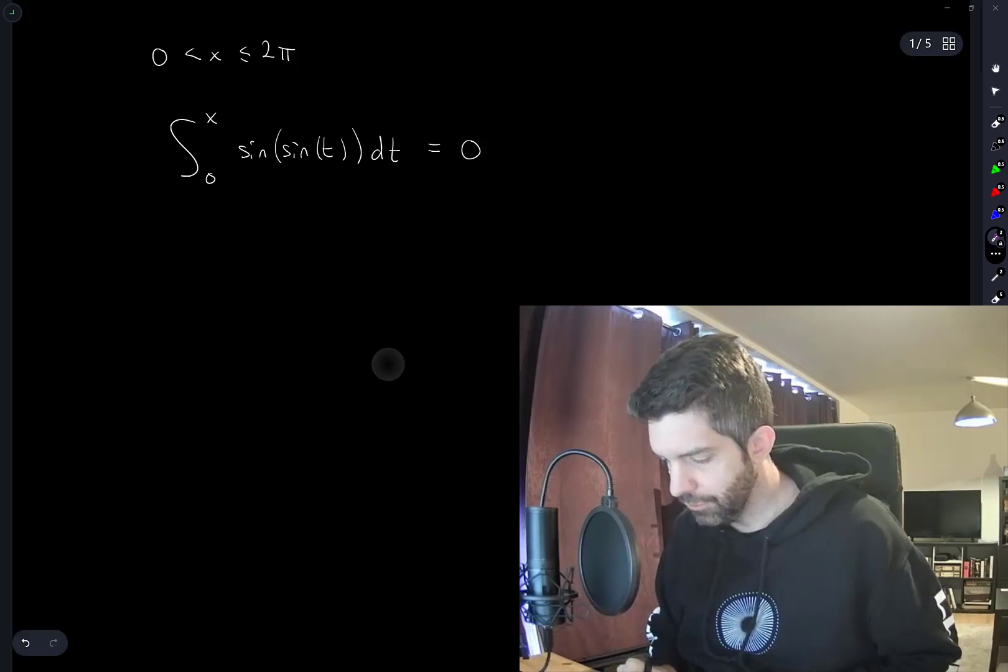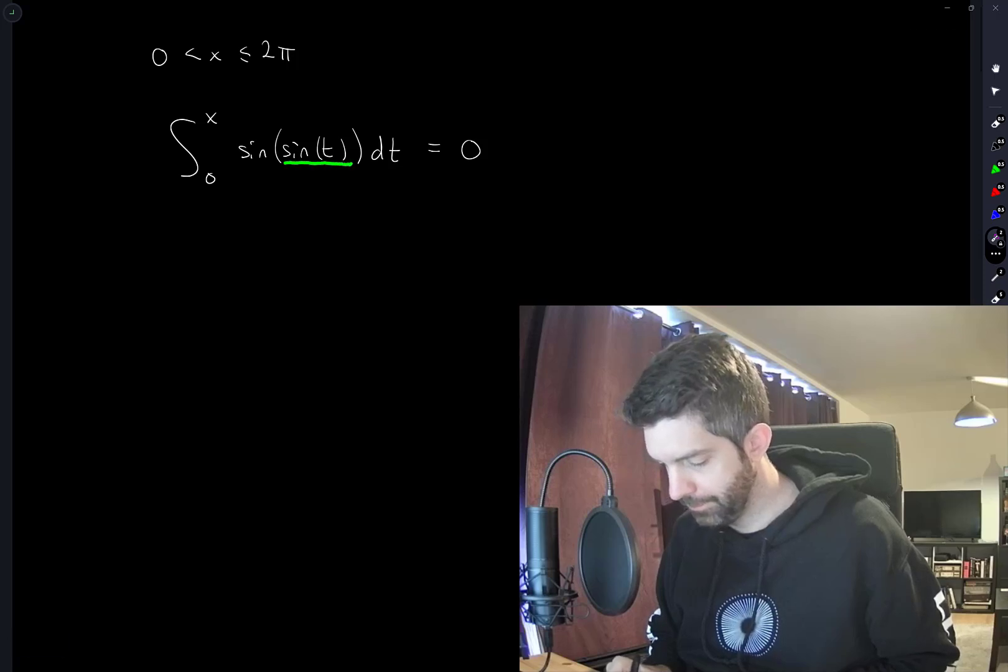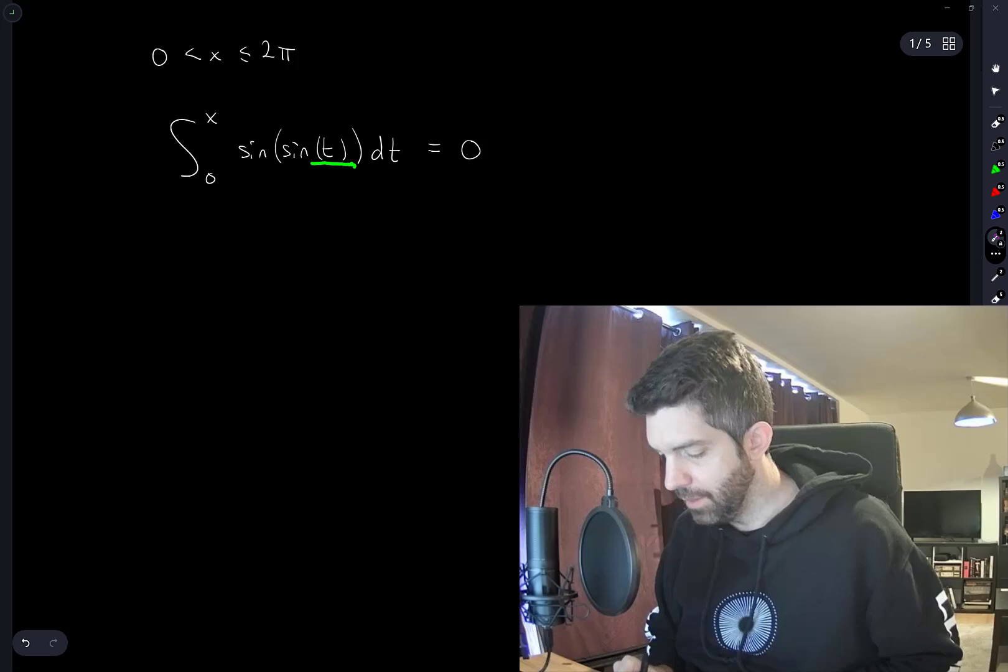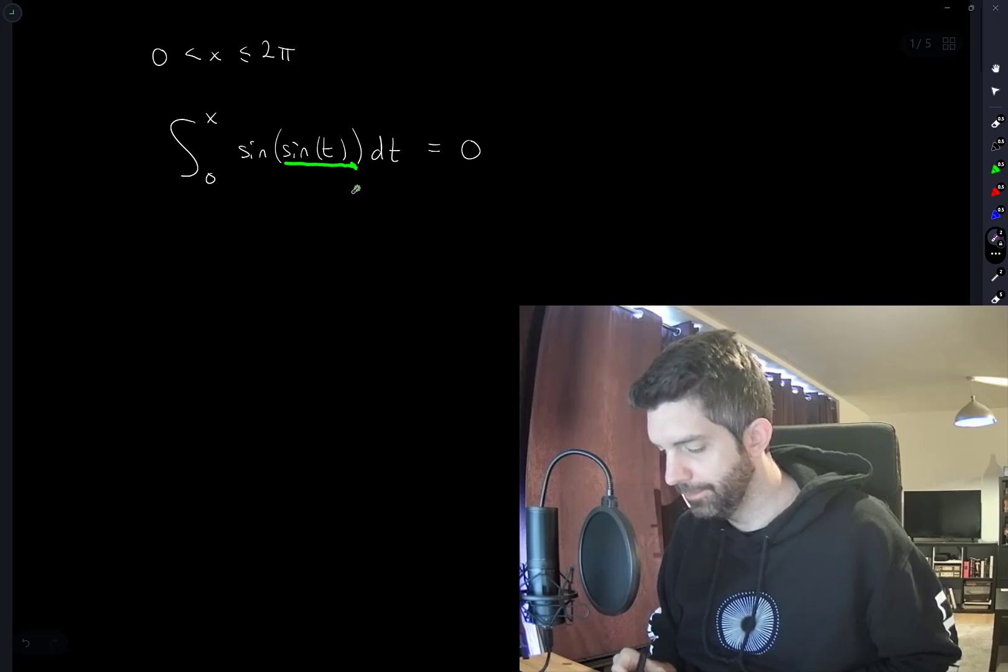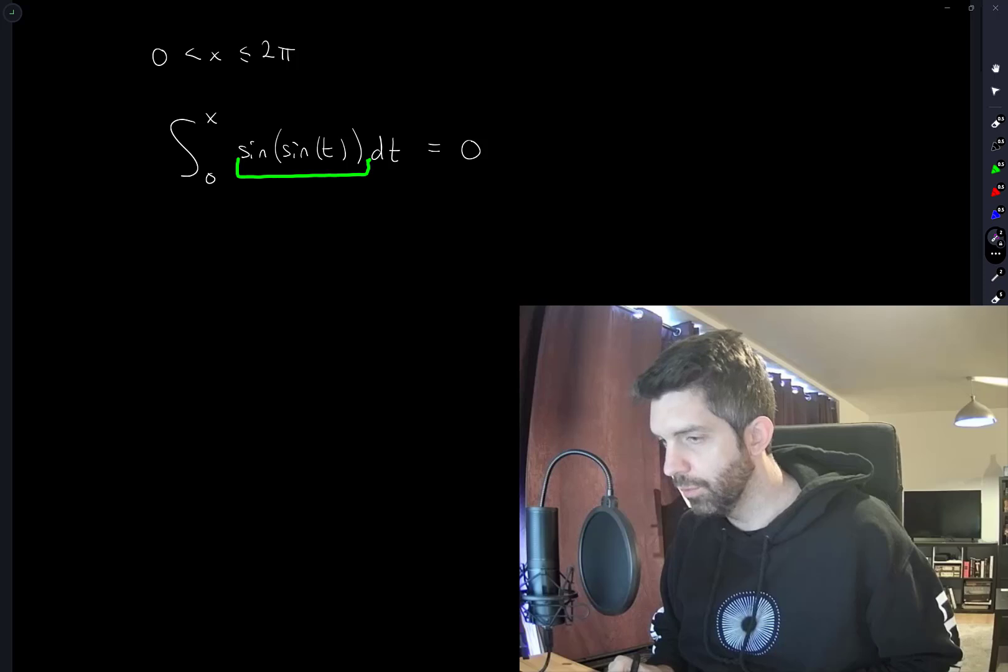So I think let's also consider where this function is positive and negative. This is positive for t between 0 and pi. Not only is it positive but it's positive and between 0 and 1. And so this is positive for t between 0 and pi.